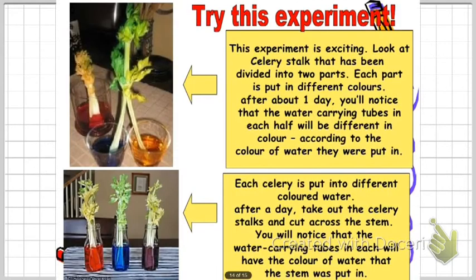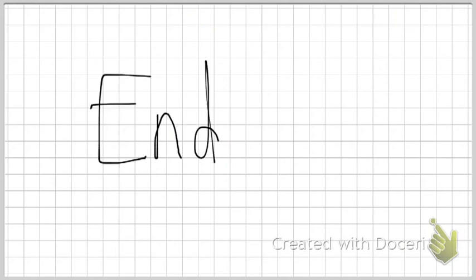I just want you to recall the experiment we did in school. Half of the celery turns blue and half turns orange because the water was colored. This shows the existence of the water-carrying tubes. If we put celery into different pots with different colored water, the celery in red water turns red, blue water turns blue, and purple water turns purple — showing that the plant transport system absorbs and transports water to all parts of the plant, as seen in the leaves of the celery stalk. With this, we have finished the entire unit. Goodbye!